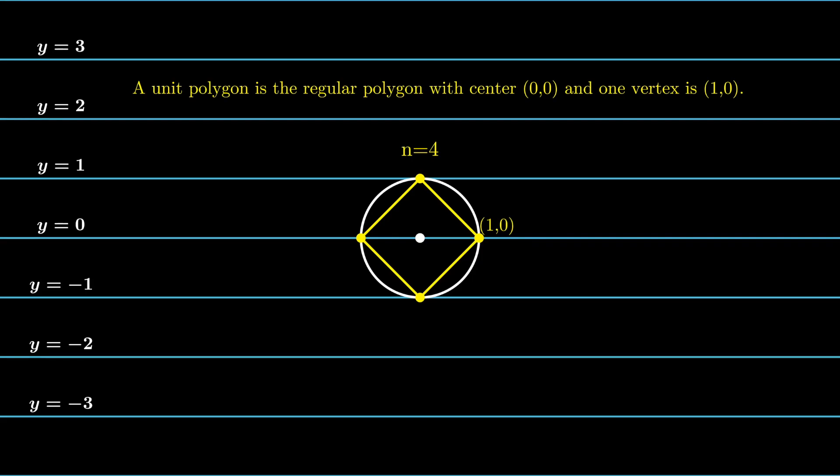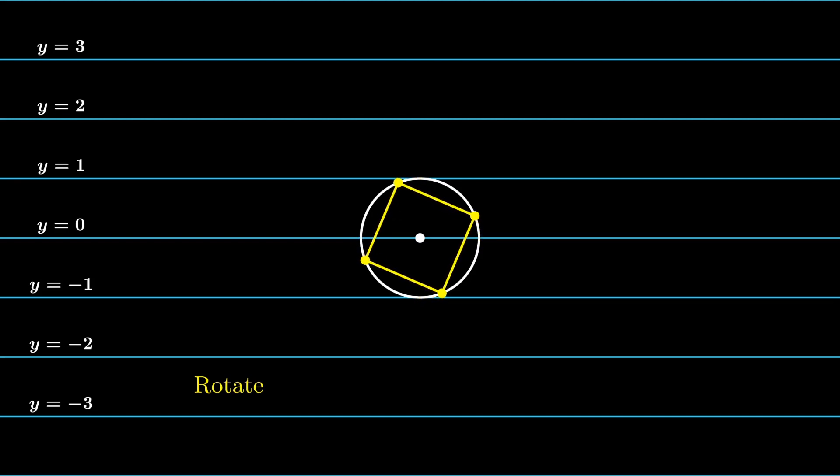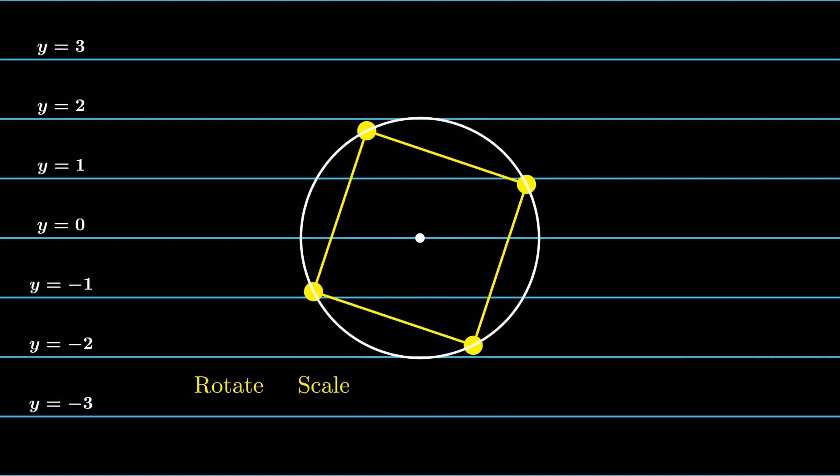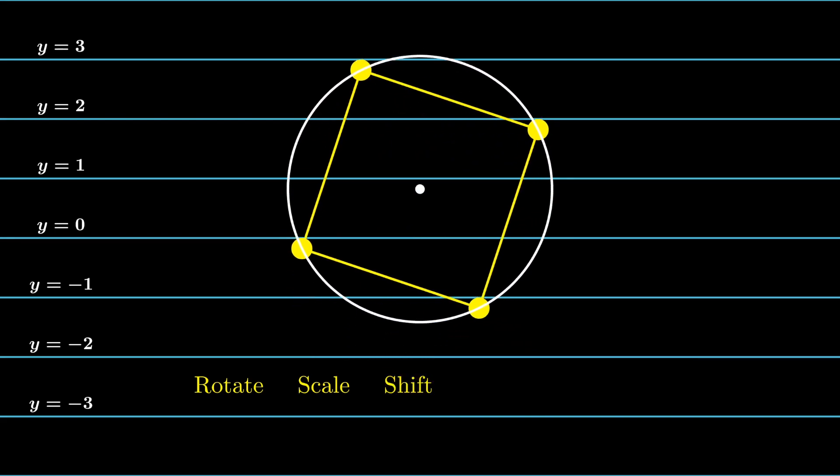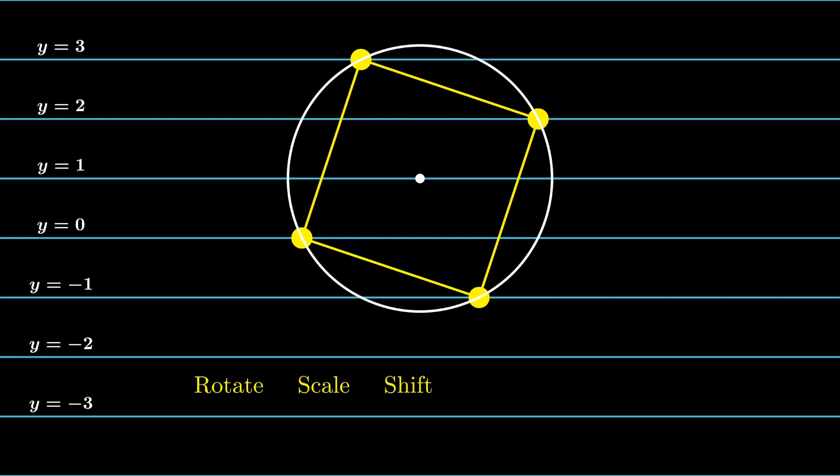So starting from the unit polygon, we could perform rotation, scaling, and shifting. With these three operations, we are able to obtain any regular polygon in this plane. And this allows us to parameterize these polygons and to handle the problem.